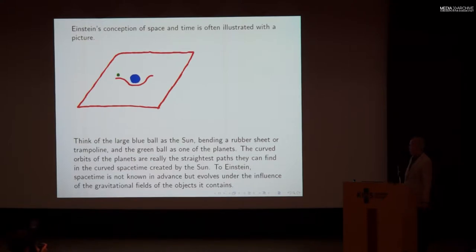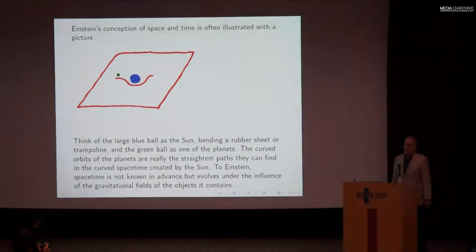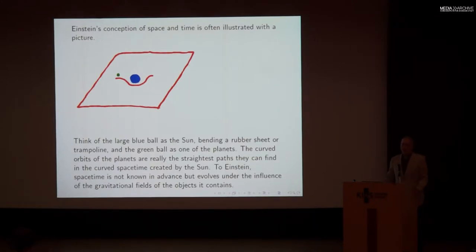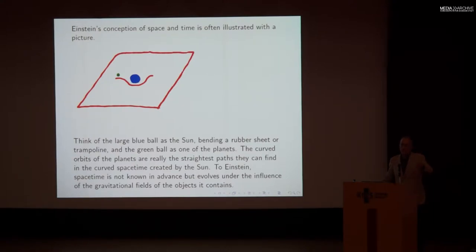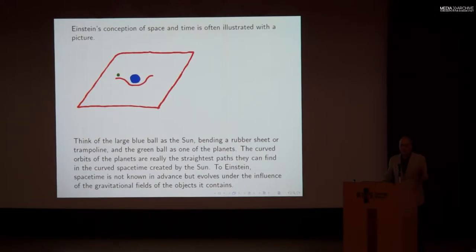To Einstein, space-time is not fixed in advance, but evolves under the influence of the gravitational fields of the objects it contains. That was actually the deepest departure that Einstein made from previous conceptions of physics. Previously, physicists had imagined space-time as simply something which was there — empty space-time in which physics happens. But Einstein said that the unfolding of space-time itself is one of the most important things of what it means when physics is happening.